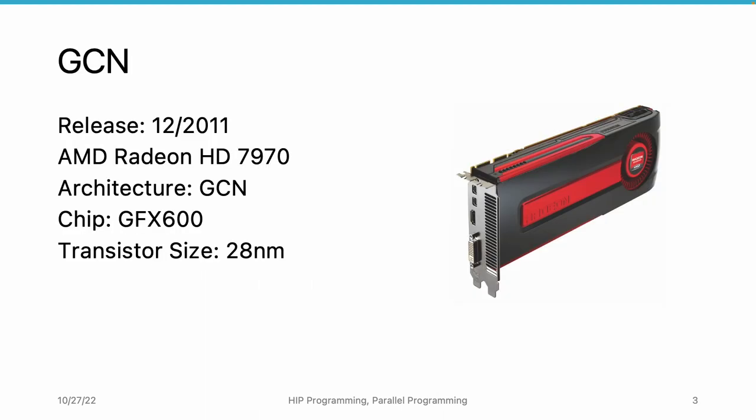The first GPU we want to introduce is the AMD Radeon HD 7970 GPU. It is released in December 2011. Before that, AMD was basically using the technology or the architecture acquired from ATI. The architecture is named as Graphics Core Next, or GCN architecture. And the chip name is GFX600.